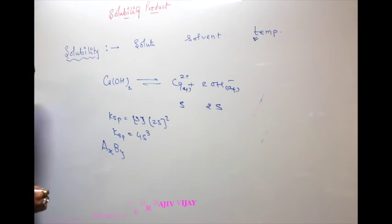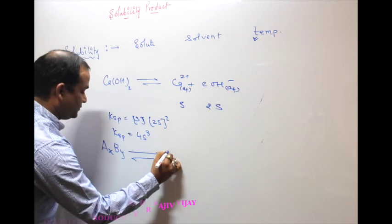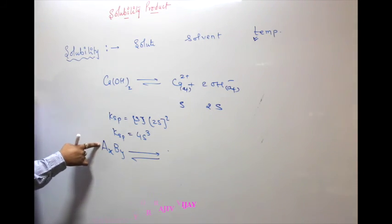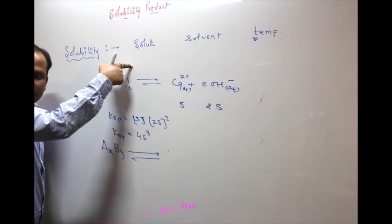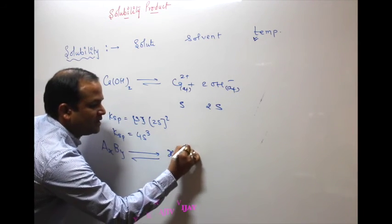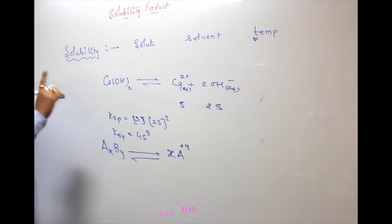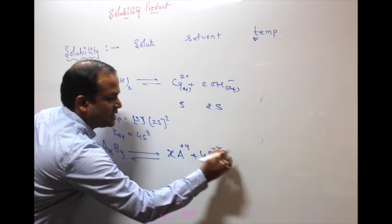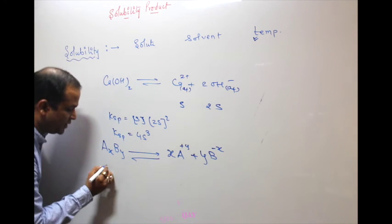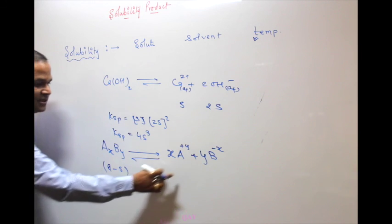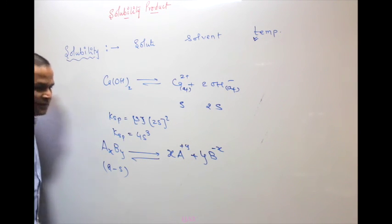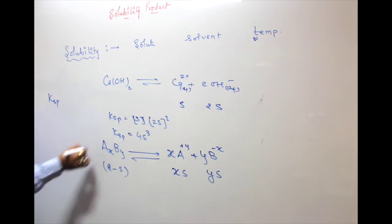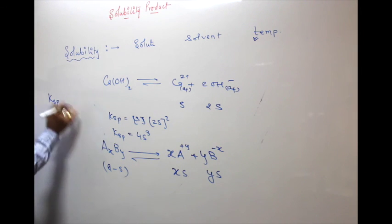For a general salt AxBy dissolved in water, it dissociates into x moles of A^y+ and y moles of B^x−. If the molar solubility is s, then [A^y+] = xs and [B^x−] = ys. The Ksp expression for this salt is Ksp = (xs)^x × (ys)^y.